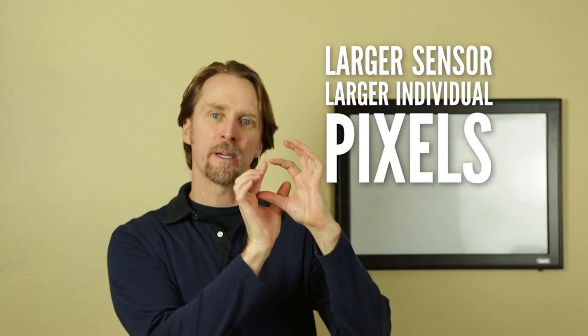For instance, if you have a point-and-shoot with 12 megapixels and then you go up to a full frame camera that also has 12 megapixels, they have the same count, the same amount of photo sites or pixels on the sensor. But your full frame camera, the actual photo sites themselves, the actual pickup area for the light, is going to be much bigger.